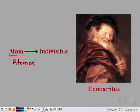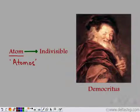According to Democritus, anything which is divided can be divided up to the stage when it reaches atoms. Atom is the smallest indivisible unit — nothing can be divided further than atoms.